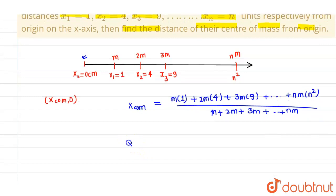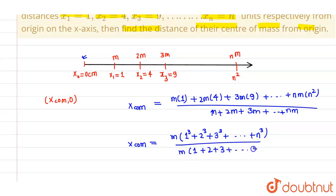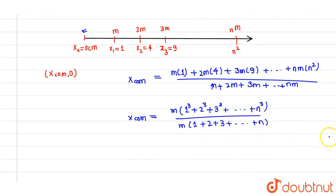So from here, if I take m common, then I will have (1³ + 2³ + 3³ + ... + n³) divided by, if I take m common from the denominator, (1 + 2 + 3 + ... + n). Now we